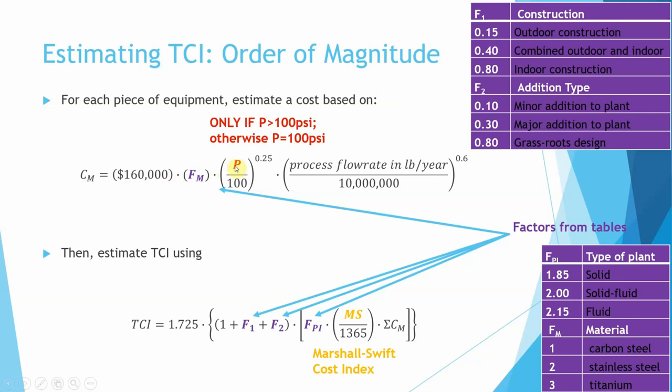You're multiplying by a pressure factor, and this is only applicable for pressures if your process is at a pressure of 100 psi or more. If it's below, just ignore it. This goes to 1. Then use the process flow rate in pounds per year. Make sure that the unit is pounds per year. You divide it by 10 million and raise that to the 0.6. This gives you the cost for each piece of equipment.